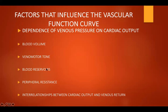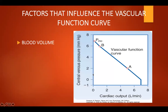The vascular function curve is dependent on blood volume, venous motor tone, blood reservoir, peripheral resistance, and the interrelationship between cardiac output and venous return. In this graph, you will note that volume is directly proportional to cardiac output. The vascular function curve is affected by variation in total volume. During circulatory standstill, meaning cardiac output is zero, the mean circulatory pressure depends only on total vascular compliance and blood volume.